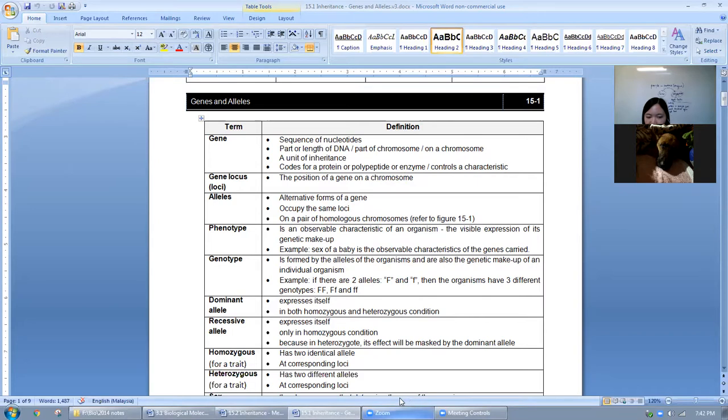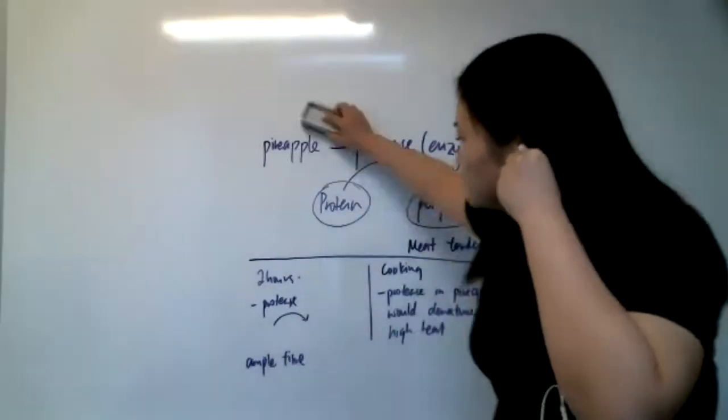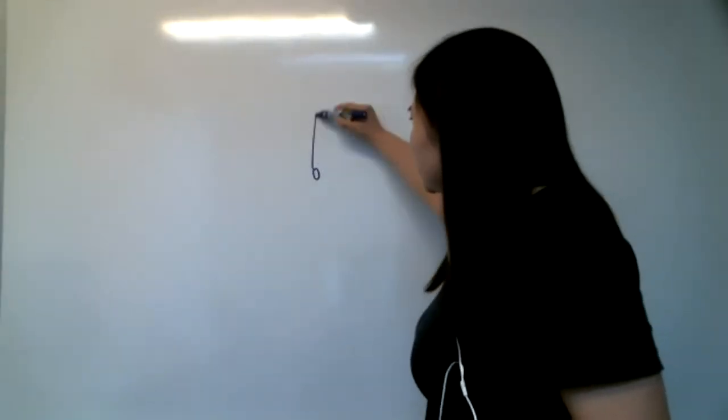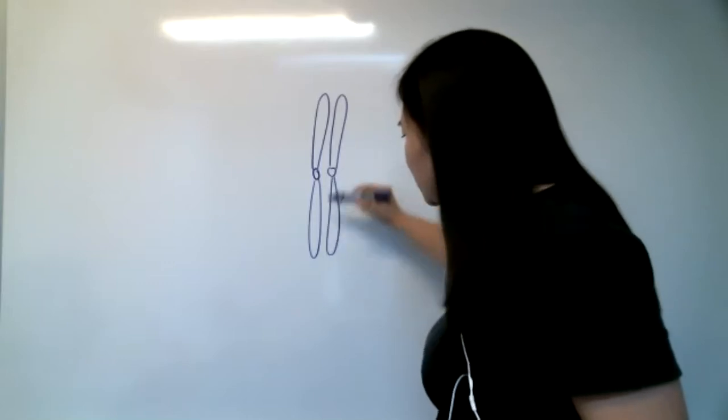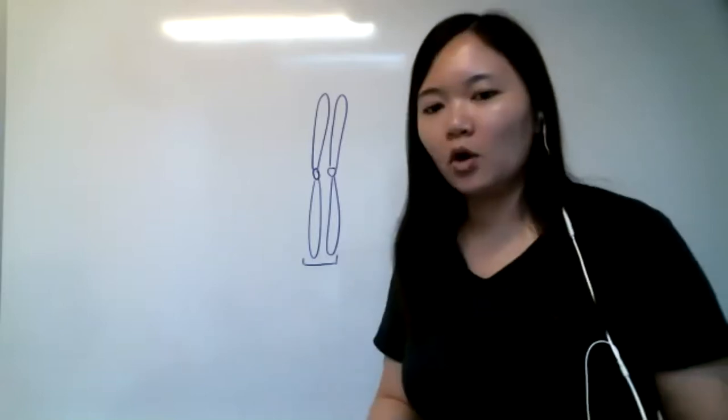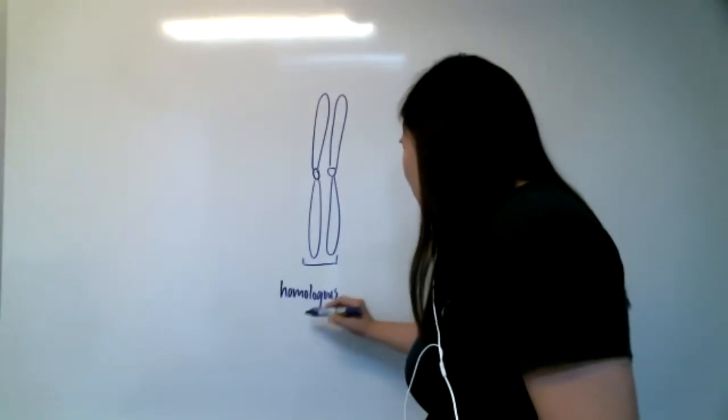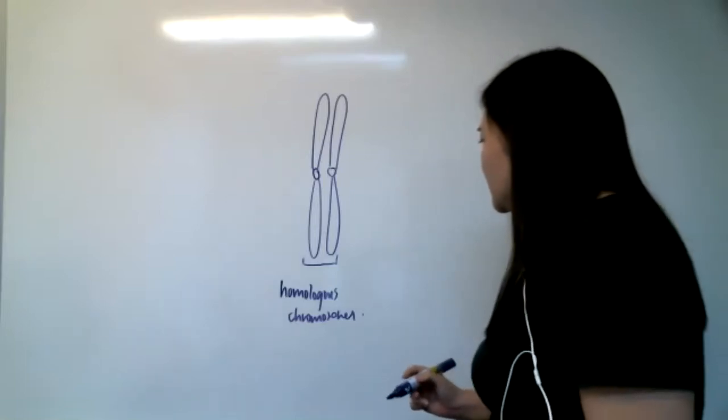If I can visualize gene and gene locus for you, it looks something like this. This is a chromosome - this is how chromosomes look. These two are homologous chromosomes. Do you know what homologous chromosomes are? Homologous chromosomes basically just means they are a pair that are similar to each other.